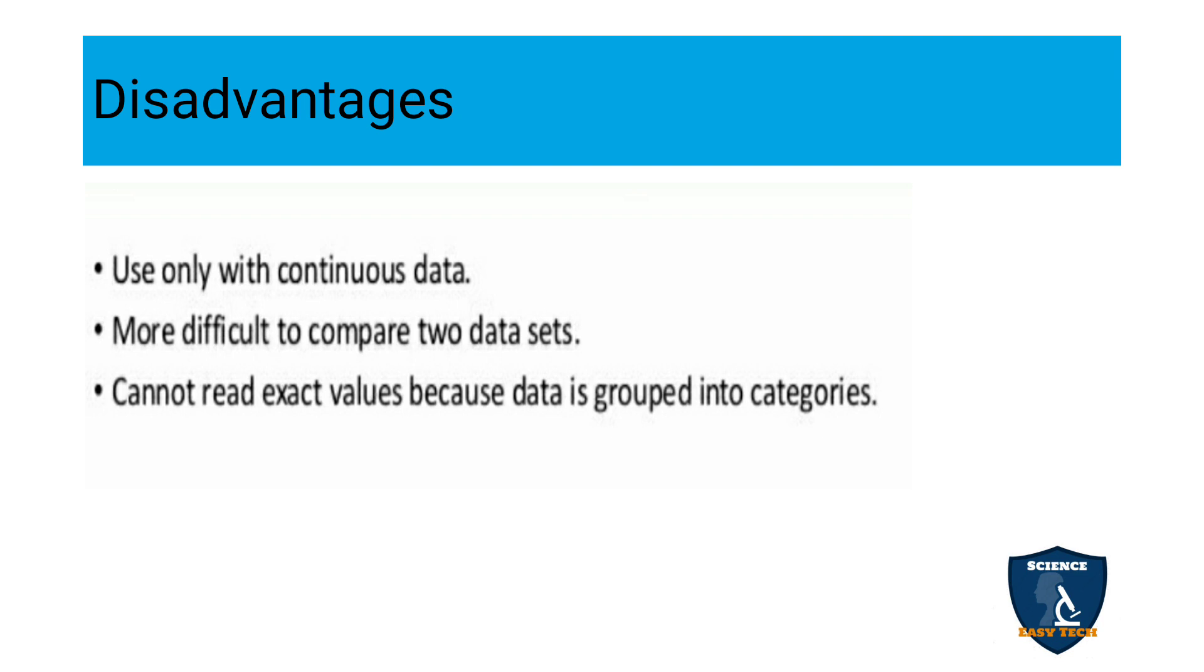Disadvantages. Moving on to disadvantages. You cannot do it for discrete data. Only with continuous data, you can plot this type of histogram. More difficult to compare two set of data. In case of two set of data, if you want to compare, the best thing is bar diagram, not this histogram. It is very difficult to compare two set of data. Cannot read exact values because data is grouped in categories. Continuous data 0 to 10 years means we are telling 12 members are in the age group of 0 to 10 years. We don't know exactly five years how many people are there we cannot tell because it is a range from 0 to 10 years totally we are having 12 members. Exactly if you want to know how many people are in the age group of 5 years you may not know. That is a disadvantage of histogram.